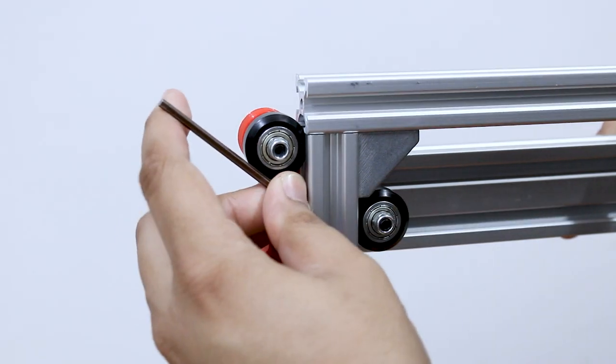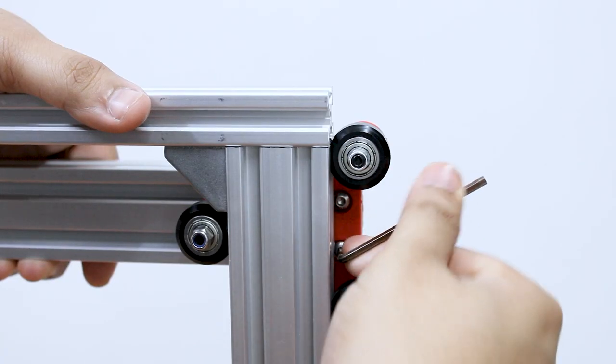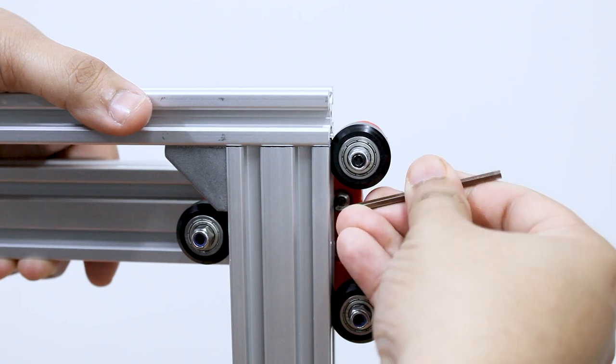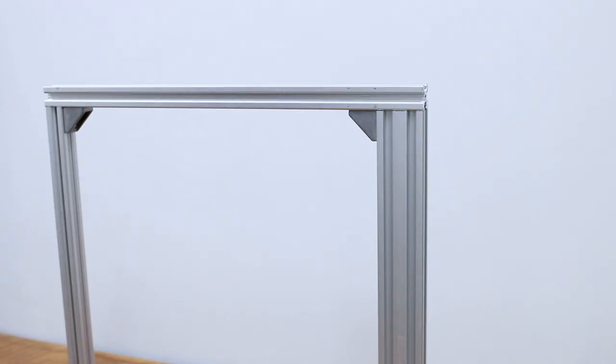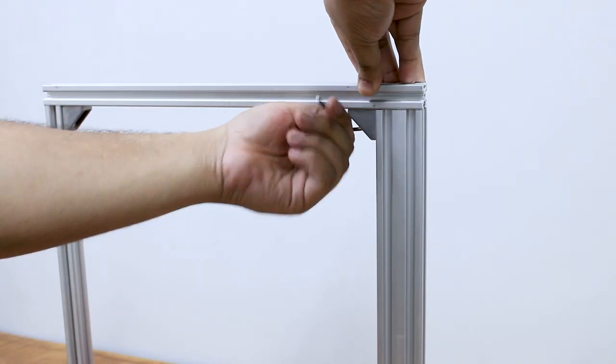Now tighten the Allen bolts on the outer side of the plates. Remove the top profile again.